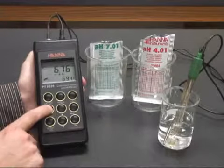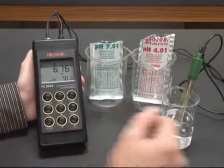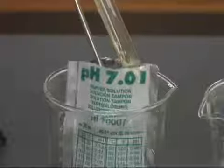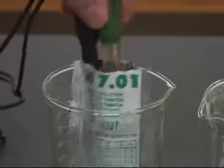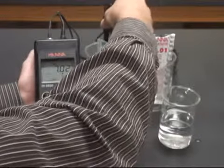What we're then going to do is push the Cal button and move into the calibration mode. You'll see it ask us for 7.01 buffer. We put the temperature sensor and the pH electrode into the 7 buffer, mix it around a little bit to make sure that we're getting any air pockets out of there.